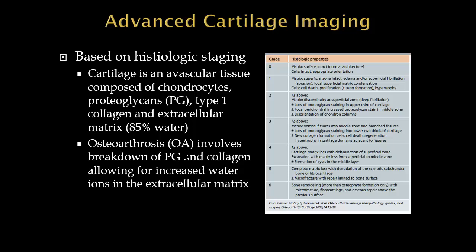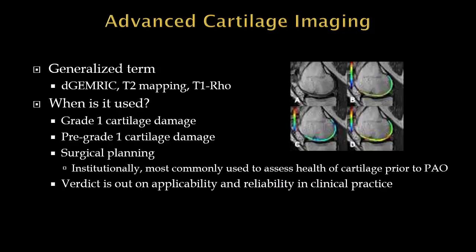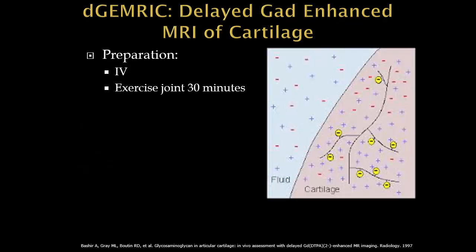Advanced cartilage imaging is sometimes called physiologic or histologic imaging because it's based on small microscopic particles in the cartilage. Cartilage is avascular, composed of the components we've discussed. In early osteoarthrosis, there's breakdown of proteoglycan and glycosaminoglycan molecules, allowing increased water into the extracellular matrix — the basis of our advanced imaging. The techniques available include dGEMRIC, T2 mapping, and T1-Rho. I'm going to focus on dGEMRIC, used for grade 1 and pre-grade 1 cartilage damage and predominantly for pre-surgical planning.